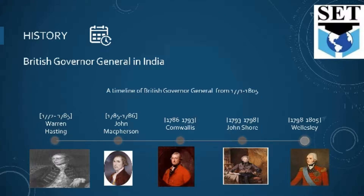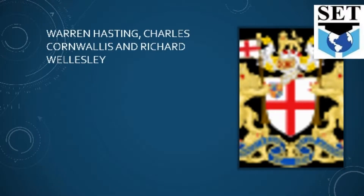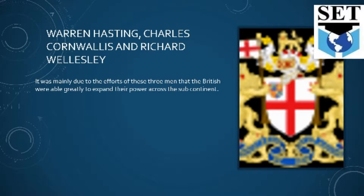In this chapter we will discuss Warren Hastings, Cornwallis, and Wellesley. Students, we discuss only these three men because they are the ones who made British rule powerful in the subcontinent. It was mainly due to the efforts of these three men that the British were able to greatly expand their power across the subcontinent. They used not only military methods but also made alliances with local rulers to strengthen their rule.